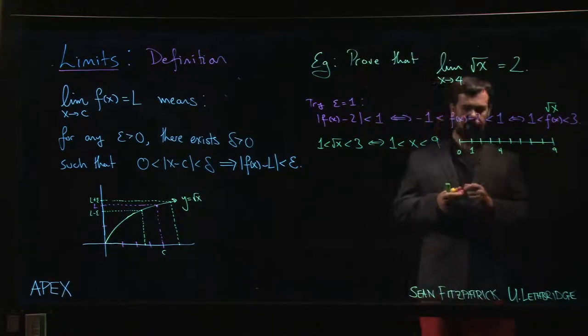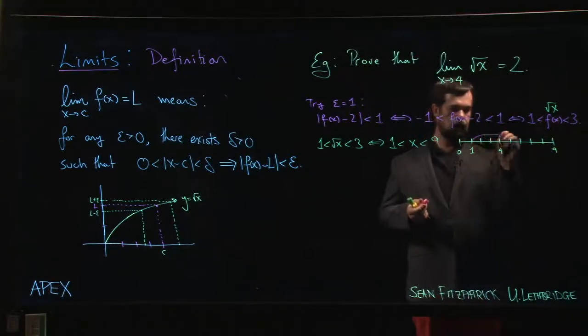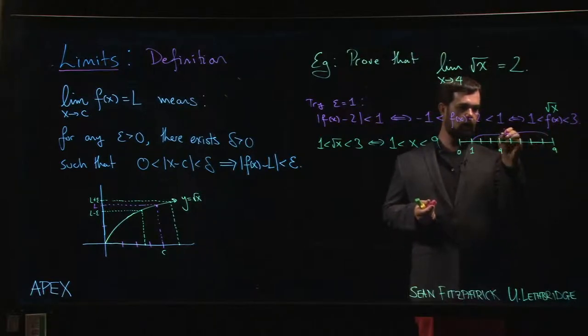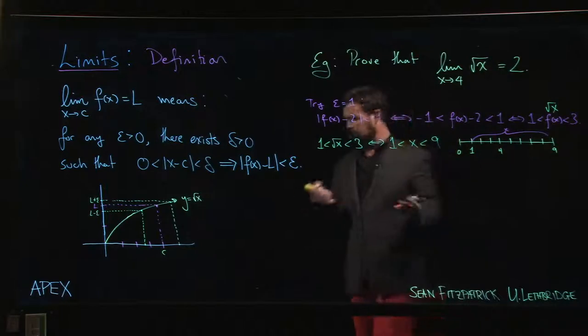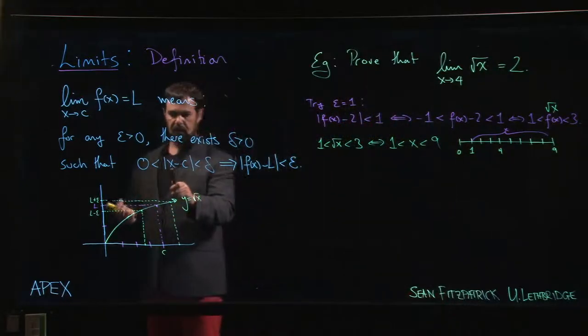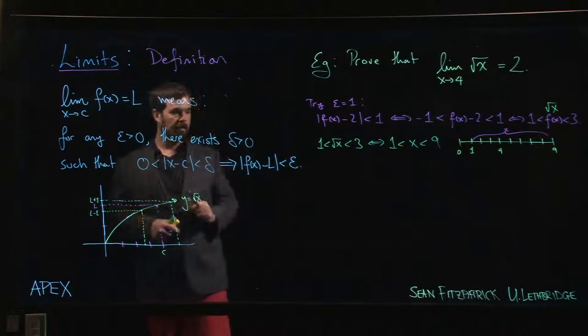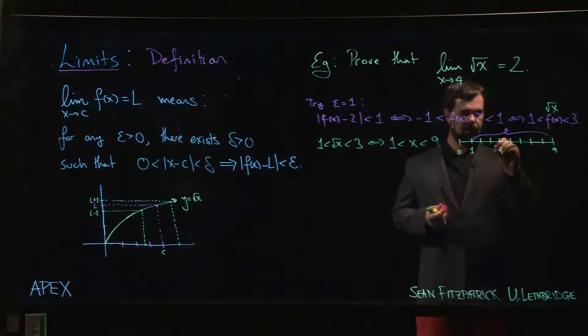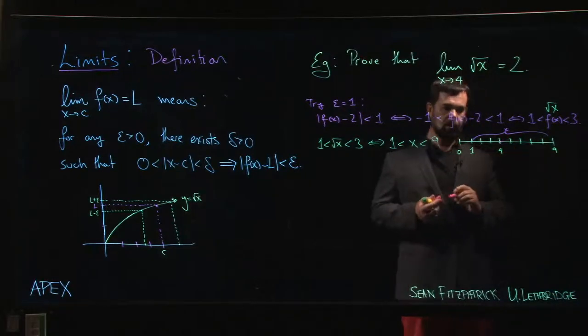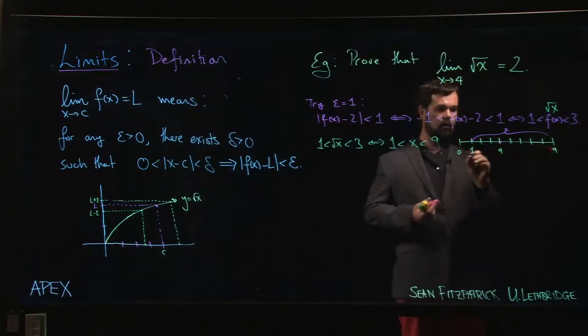So I need x to be in here, but I want to make this symmetric. I want to phrase it like this: I want to say that the distance between x and four is less than some delta. So what I do is I come back, I single off here's my four, and I look which is closer, one or nine? Which of those is closer to four? Well, certainly one is.